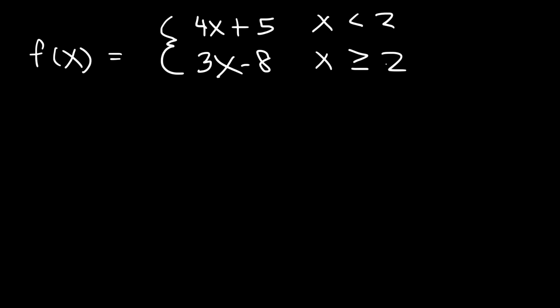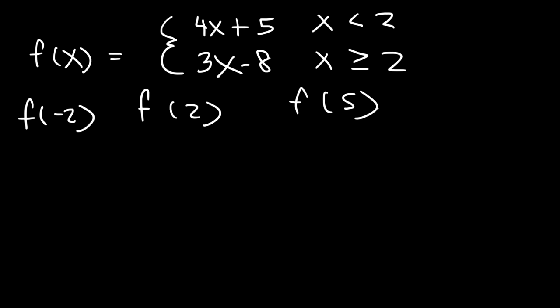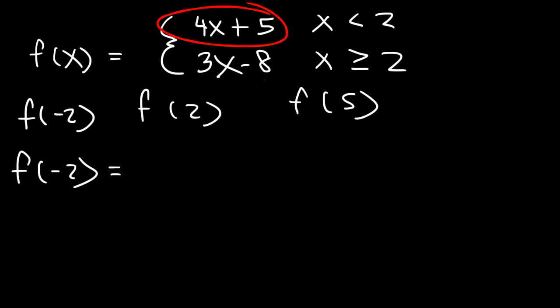Go ahead and find the value of f of negative 2, f of 2, and f of 5. Feel free to pause the video and work on this problem. So let's evaluate the function when x is negative 2. Should we use the first portion of the piecewise function or the bottom part? Should we use 4x plus 5 or 3x minus 8?